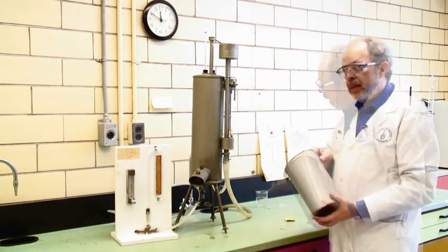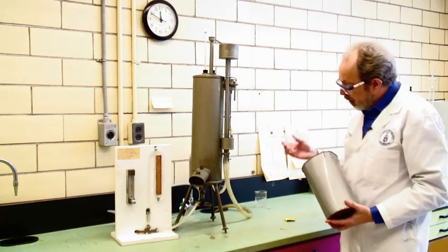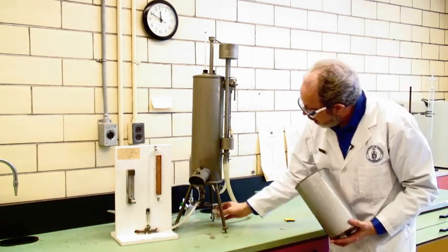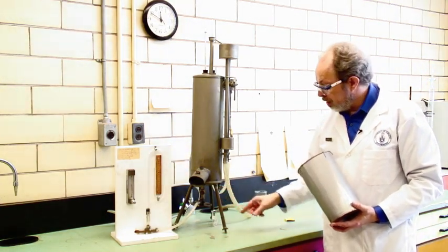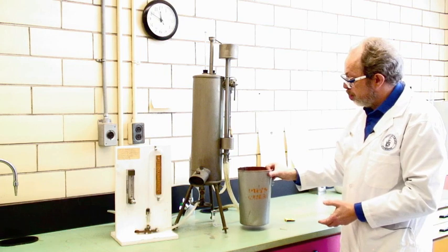When you are ready to do the measurement take a clean dry beaker and put it underneath the drip of the condensate. Take a large bucket and put it underneath the collection arm.